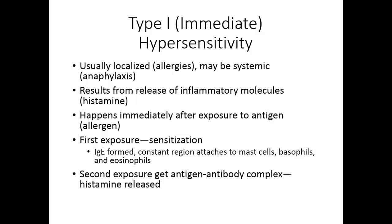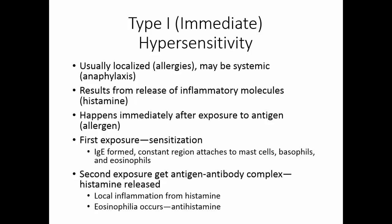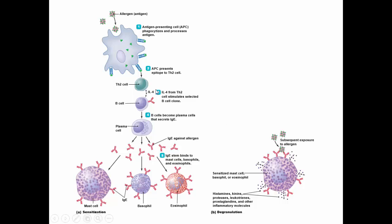The constant region of the IgE antibody will attach to mast cells, basophils, and eosinophils. The next time you're exposed, we get an antigen-antibody complex. This causes histamine to be released from the mast cells. We get the localized inflammation because of the histamine release, but we also get eosinophilia. Eosinophilia is an increase in eosinophils. Eosinophils contain antihistamine.